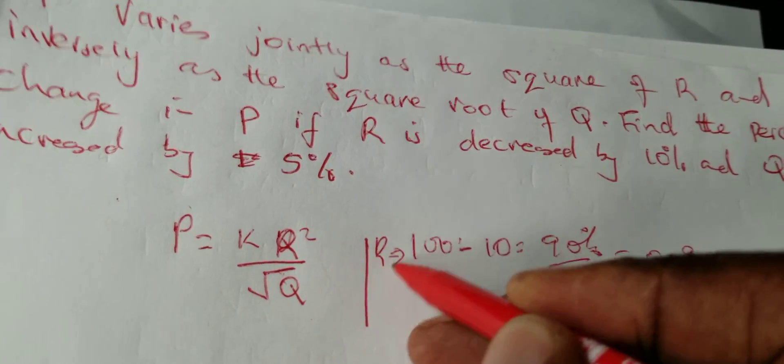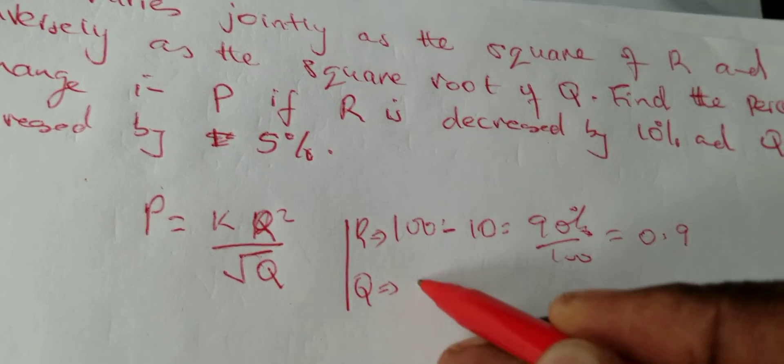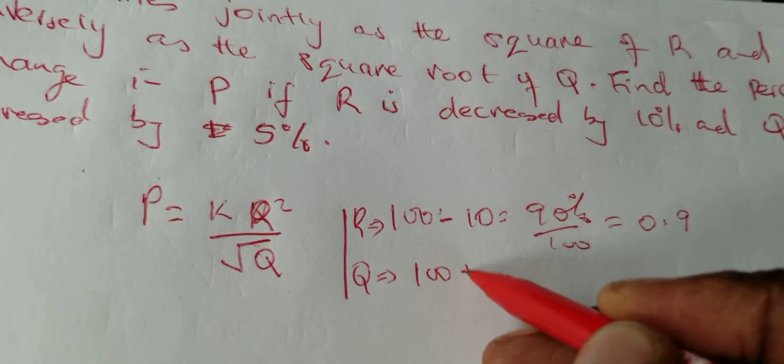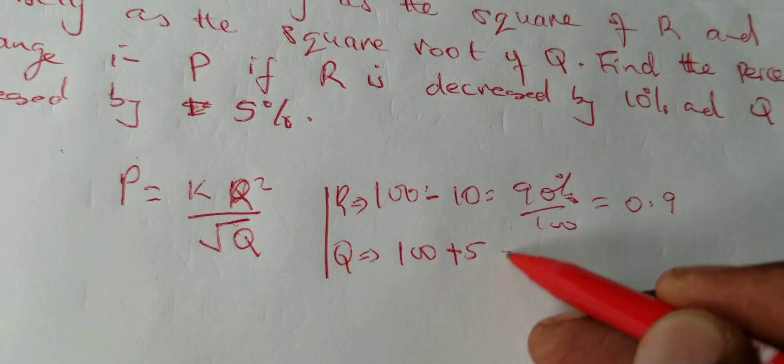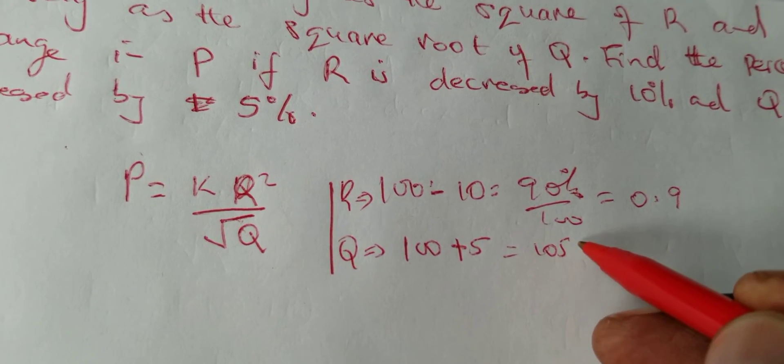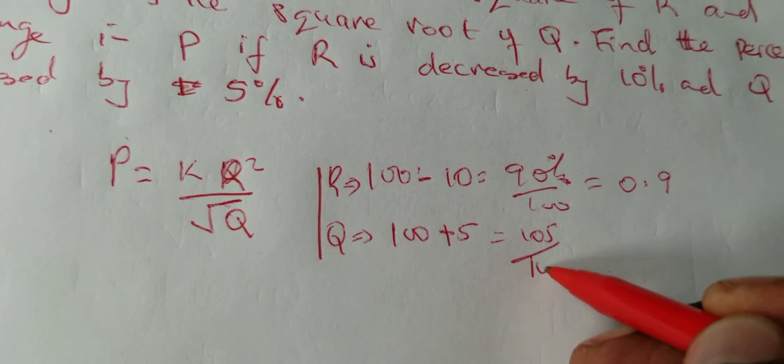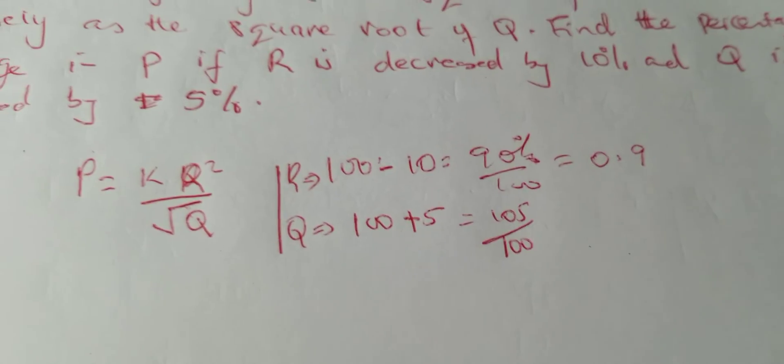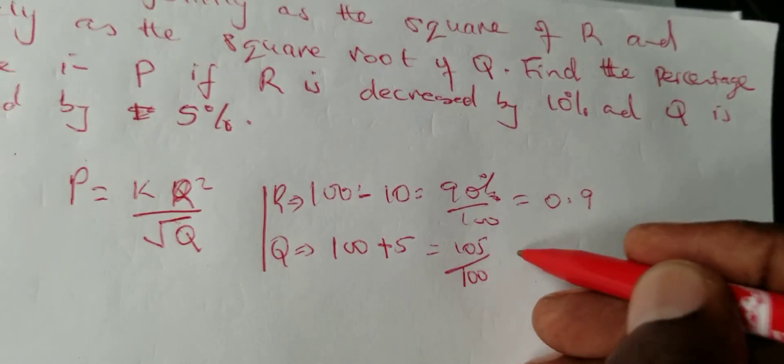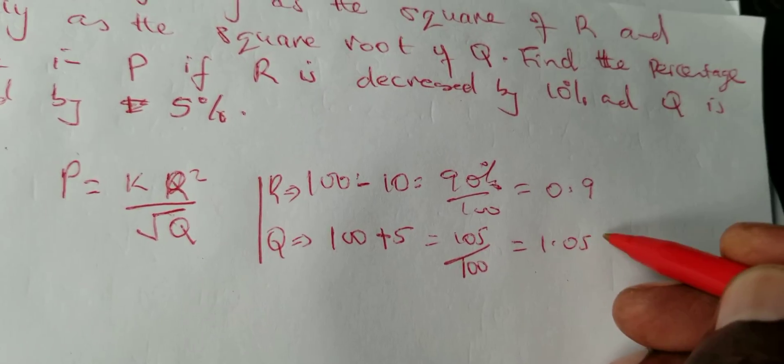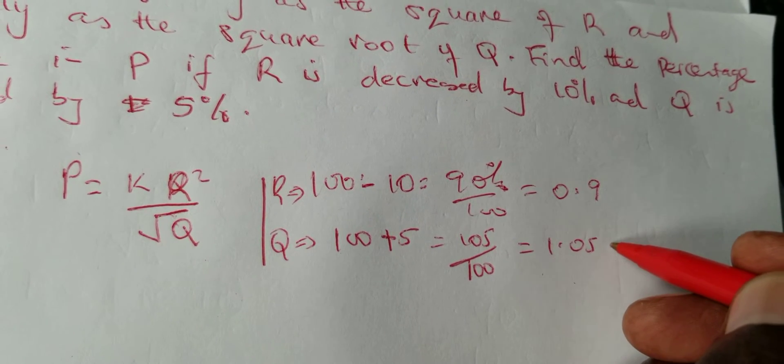You increase by 5, you get 105 percent. 105 percent is 105 divided by 100, so you will get 1.05 of the original Q.